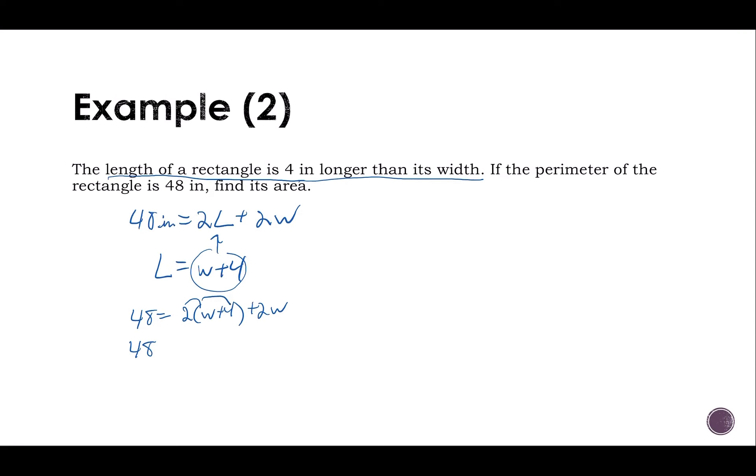48, we have to distribute, is two W plus eight plus two W. 48 is then four W plus eight. I subtract eight from both sides.